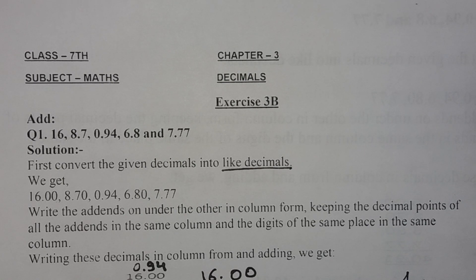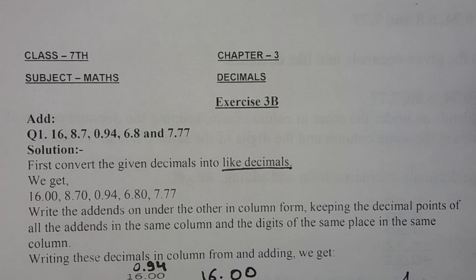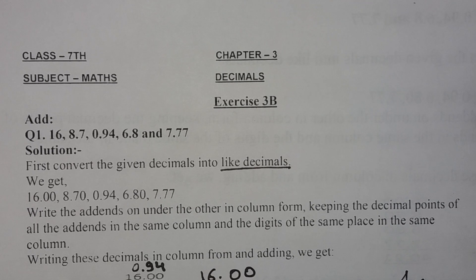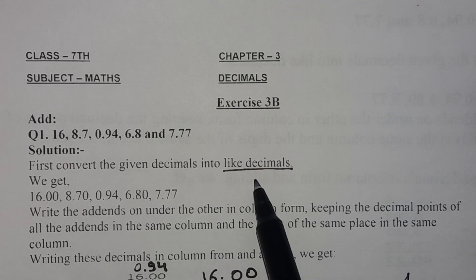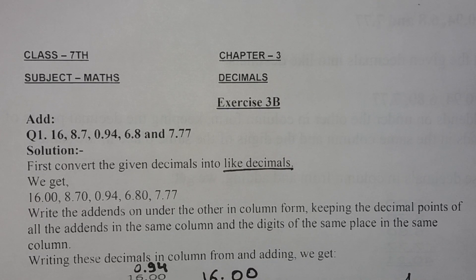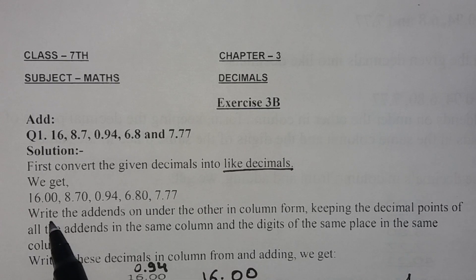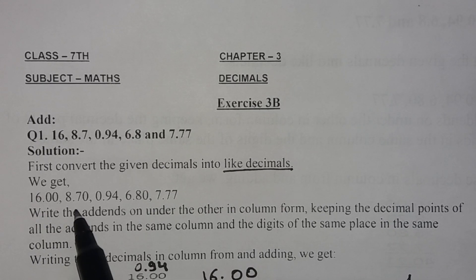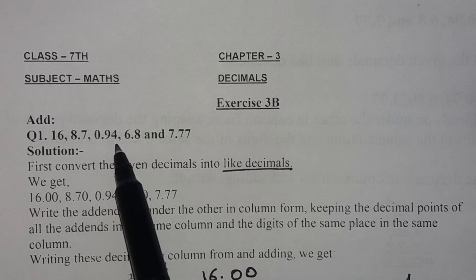In question number one, we have been given 16, 8.7, 0.94, 6.8, and 7.77. We have to add all these numbers. Before adding, first of all we will convert these numbers into like decimals. After converting, 16 will be 16.00, 8.7 will be 8.70.